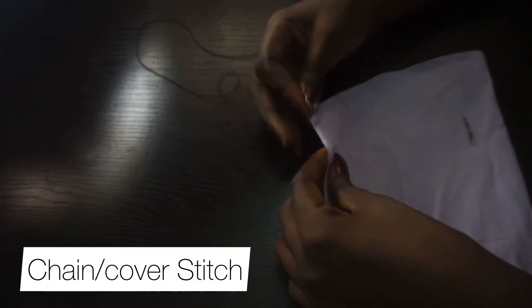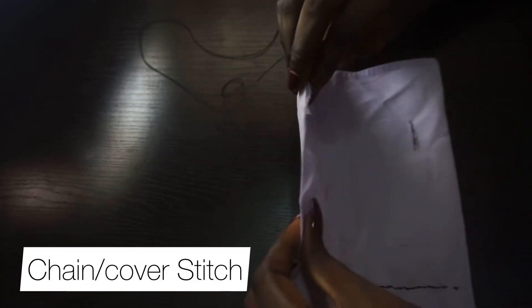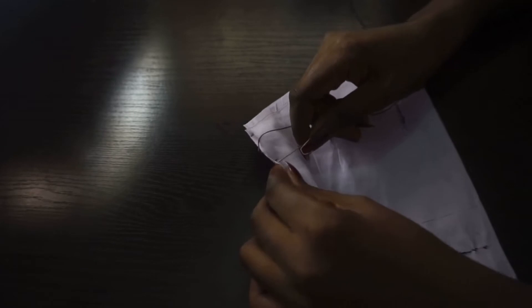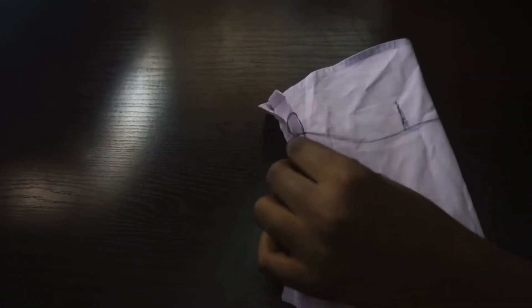The next one is the chain stitch. I like to call it the cover stitch. It's basically used to cover all fabrics that fray at the edges or to make your inside sewing neater, basically a finishing stitch.